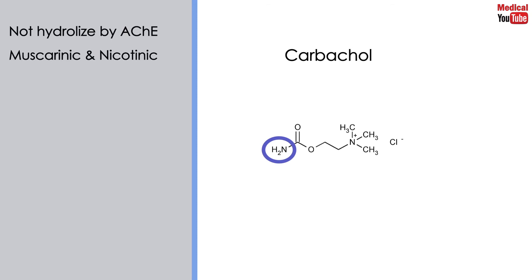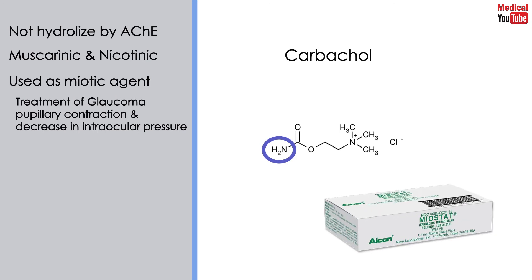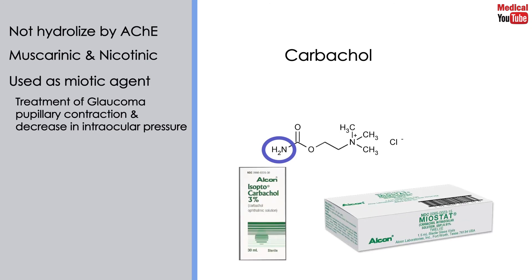But it still has muscarinic and nicotinic actions. Because of its high potency, receptor non-selectivity, and relatively long duration of action, carbachol is rarely used therapeutically, except in the eye as a miotic agent to treat glaucoma by causing pupillary contraction and a decrease in intraocular pressure, and it is available with the brand names Miostat and Isopto Carbachol.